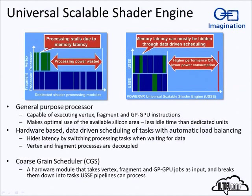The USSE — universal scalable shader engine — is a general-purpose processor. Instead of having separate dedicated processors, you have one unit which can do both vertex and fragment tasks. That means you don't have silicon sitting around doing nothing while another part of the core is overly busy — for instance, if your scene has more fragment processing than vertex processing, which is commonly the case these days.